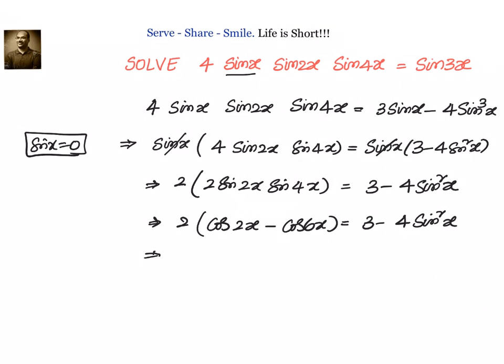Now, what is cos 2x formula? Cos 2x is 1 minus 2 sin squared x minus cos 6x equals 3 minus 4 sin squared x.